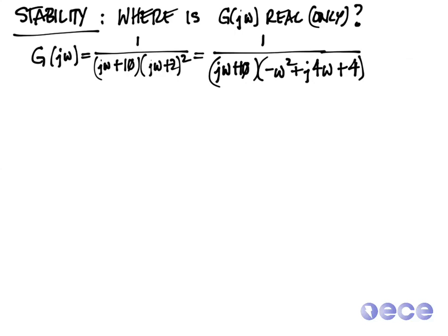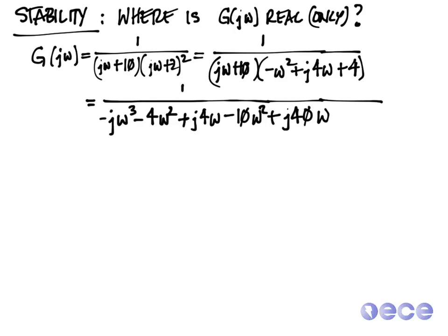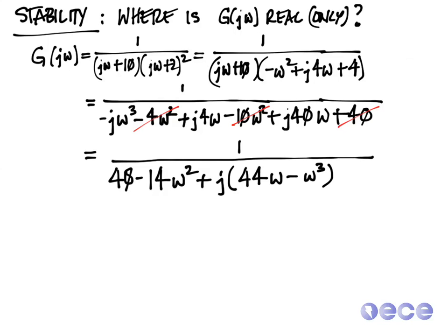J omega plus 10 times minus omega squared plus j 4 omega plus 4. So that's expanding the right term in the denominator. Now let's multiply through the j omega plus 10, and we get minus j omega cubed minus 4 omega squared. That multiplies the j omega through times the 3 term polynomial. Now we're going to multiply the 10 through: minus 10 omega squared plus j 40 omega plus 40. Now let's combine all of our terms, the j terms and the real terms.